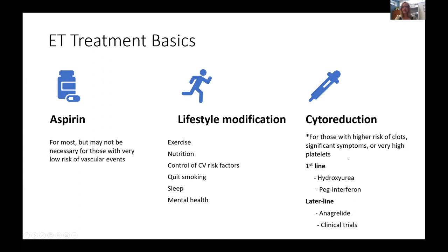The last thing is cytoreduction — medications to actually reduce the blood cells. This is not necessary in all patients with ET, but we do consider cytoreduction treatments in those with higher risk of clots: typically those with age greater than 60 and a JAK2 mutation, or people who have ever had a blood clot. Another indication is very significant symptoms impairing quality of life, or if the platelet count is extremely high — more than one million or more than 1.5 million.